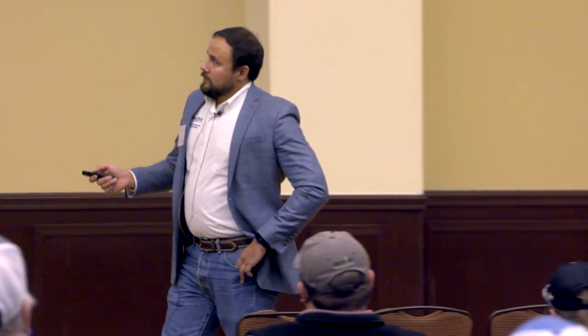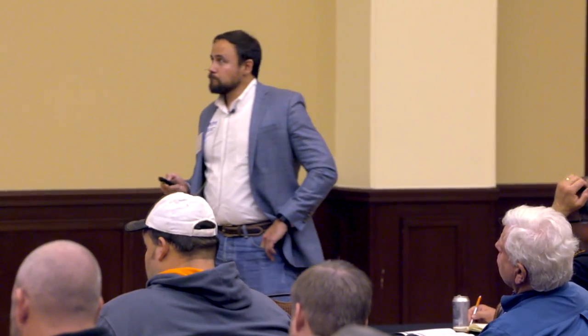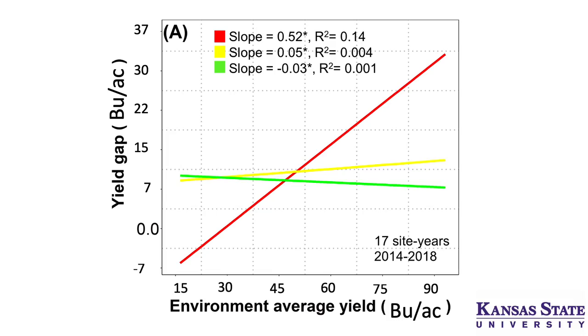For varieties like Monument or 1863, the good disease package means less fungicide response, but potentially weaker straw strength means extra nitrogen can cause lodging. Varieties with better straw strength but less disease tolerance gain quite a bit from intensive management. Looking at gain versus average yield potential — susceptible varieties show that the higher the yield potential, the higher the yield gain, because higher yield potential is typically associated with more disease pressure.